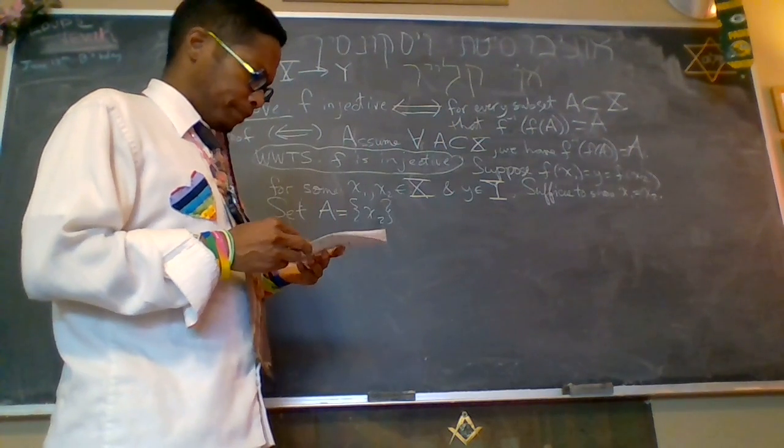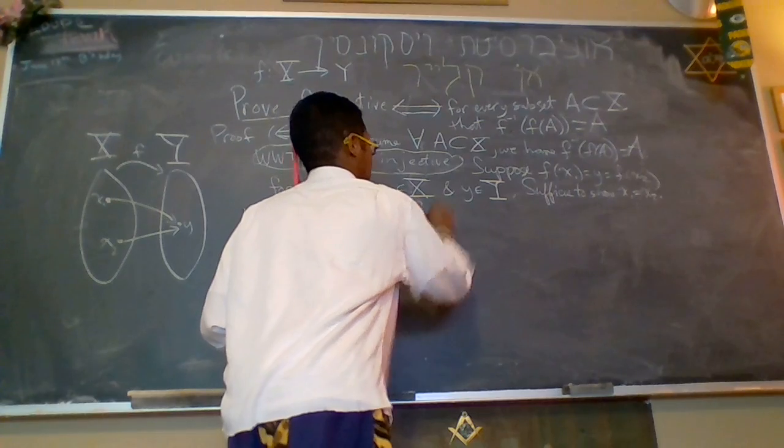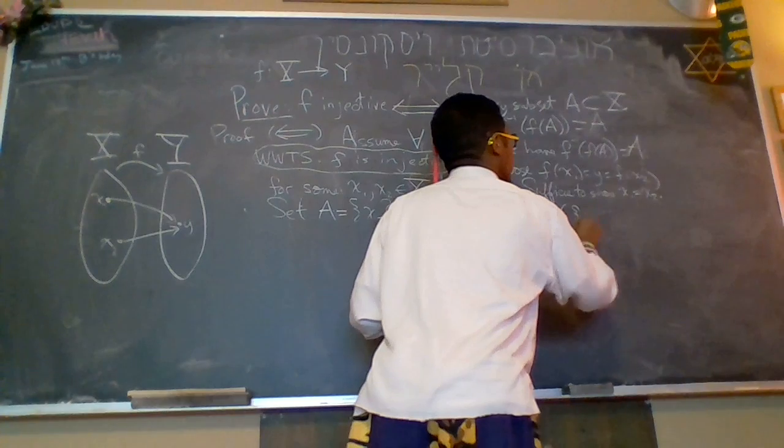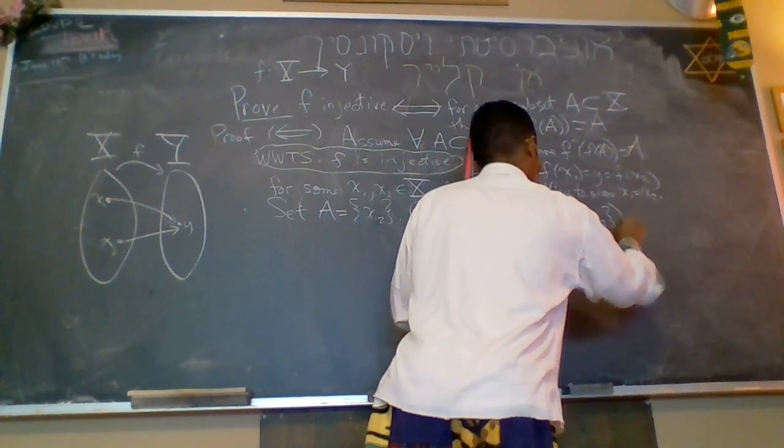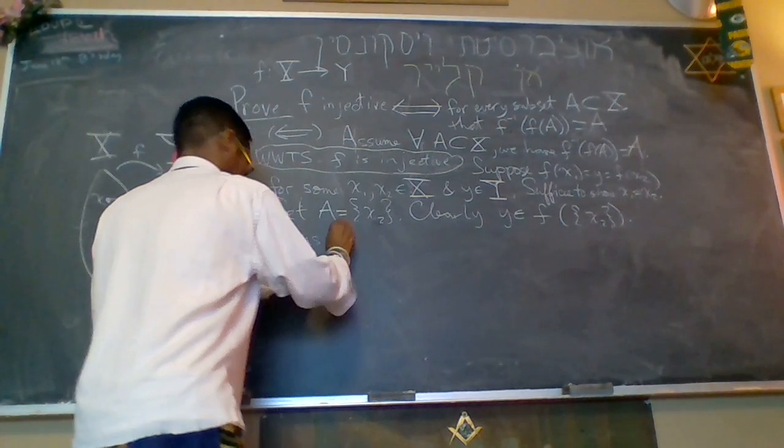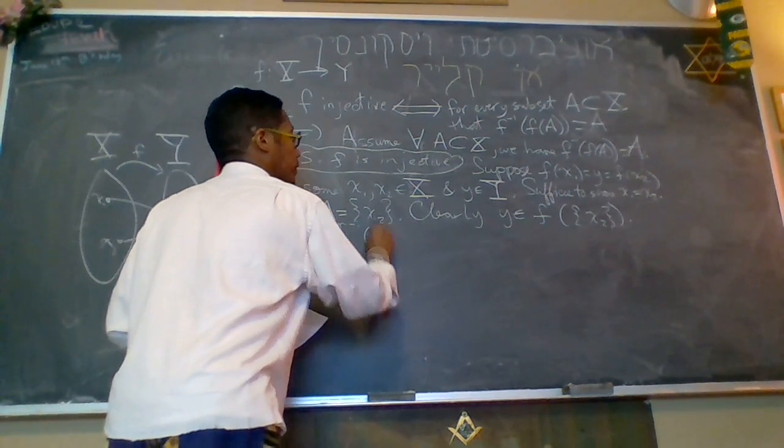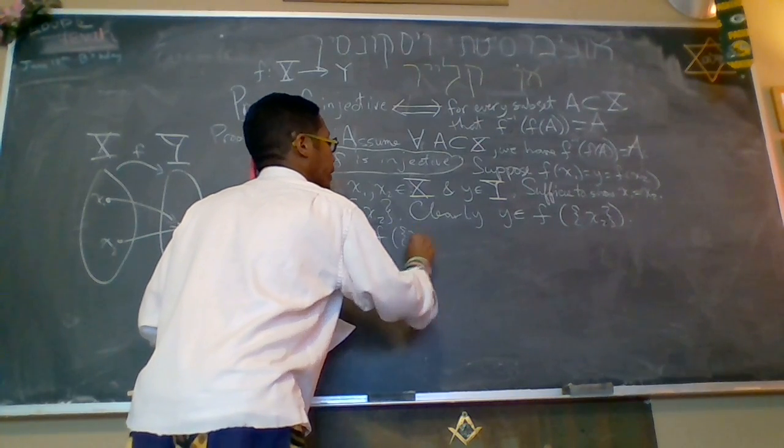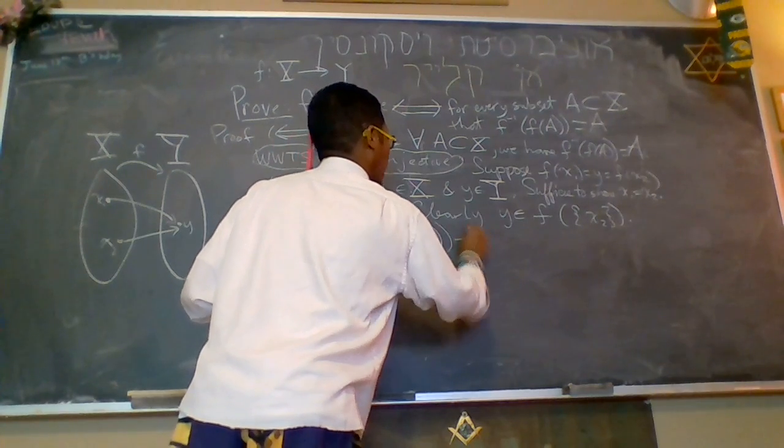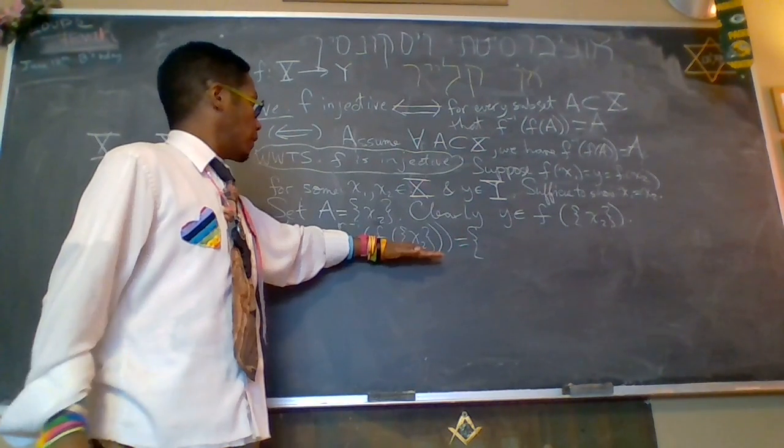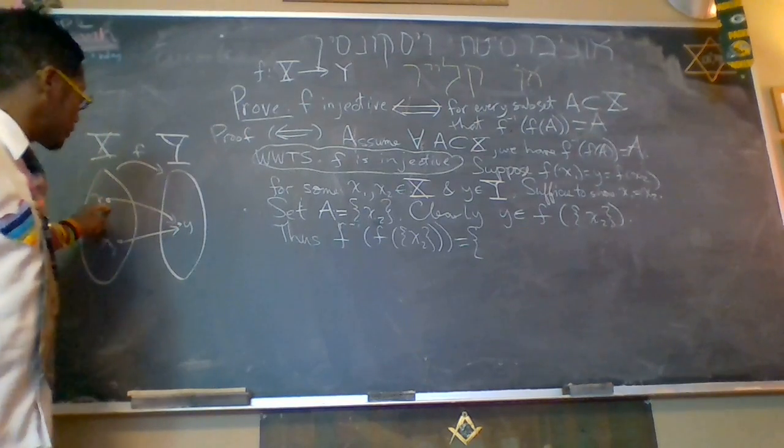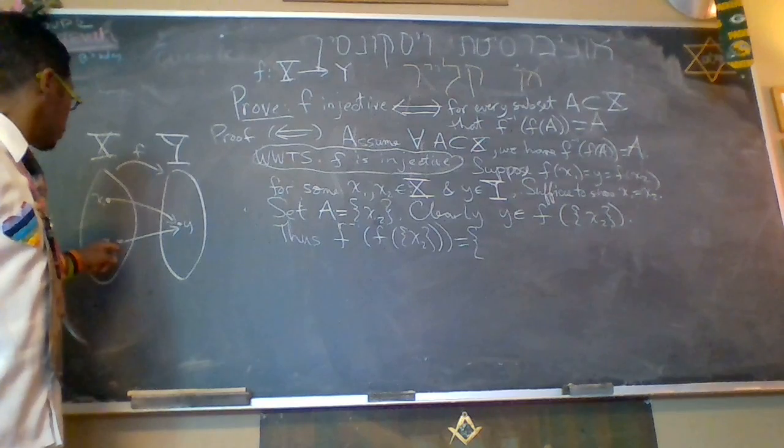Alright, so clearly, y is an element of the image of the set containing x2. Thus, the inverse image of the image of the set containing x2 has some things in it. So y is in this set f of x2. But the pre-image is going to be x1. It's going to be x2. Maybe there's other stuff. Maybe there's other stuff that maps that.